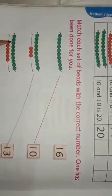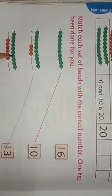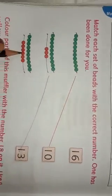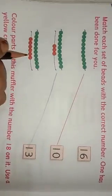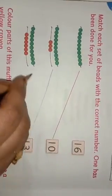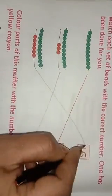Then 1, 2, 3, 4, 5, 6, 7, 8, 9, 10. Then 1, 2, 3, 4, 5, 6. 10 and 6 is 16. 1, 6, 16. So we match here. In this way you have to complete this work.